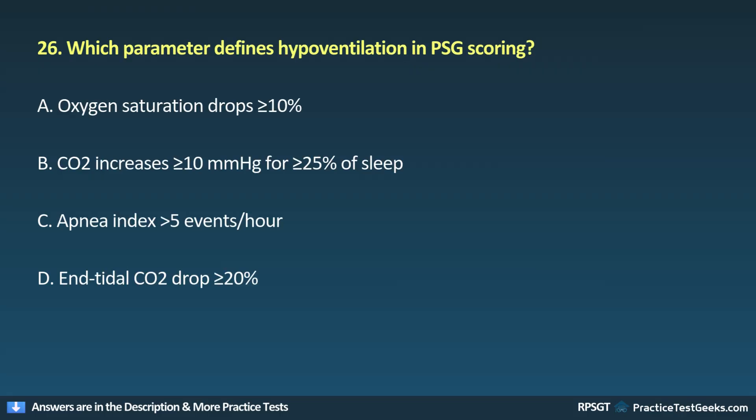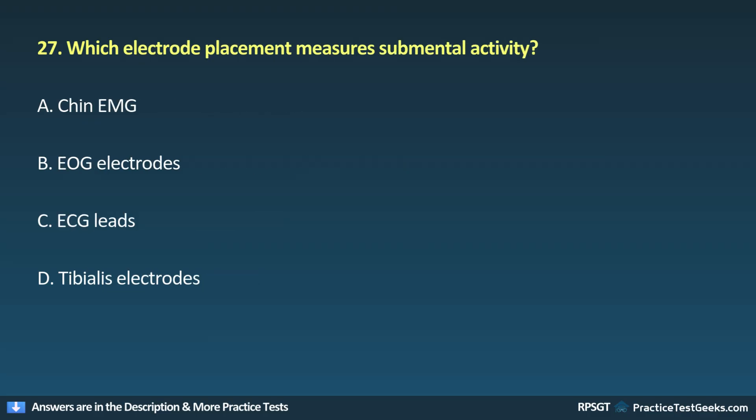Question 26: Which parameter defines hypoventilation in PSG scoring? A. Oxygen saturation drops greater than or equal to 10%. B. CO2 increases greater than 10 mmHg for more than 25% of sleep. C. Apnea index equals 5 events per hour. D. End-tidal CO2 drop greater than 20%.